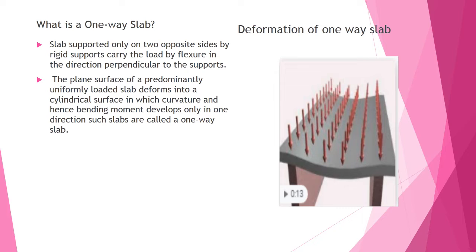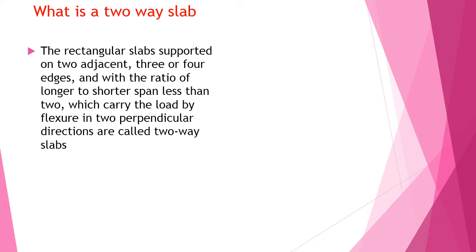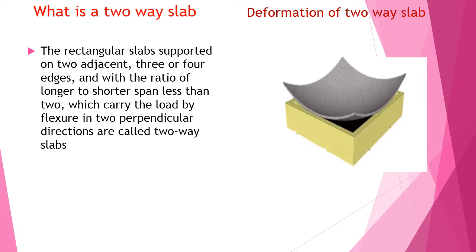The deformation of a one-way slab is shown in the image. What is a two-way slab? Rectangular slabs supported on two adjacent, three, or four edges — with their ratio of longer to shorter span less than two — carry the load by bending in two perpendicular directions and are called two-way slabs. The deformation of a two-way slab is totally curved.